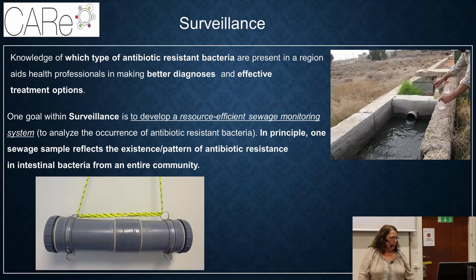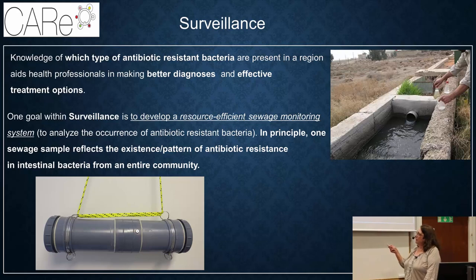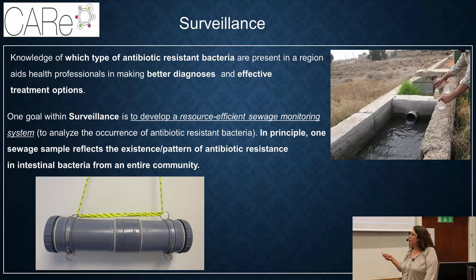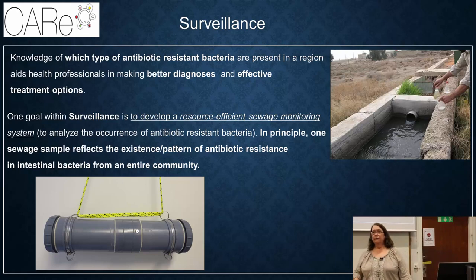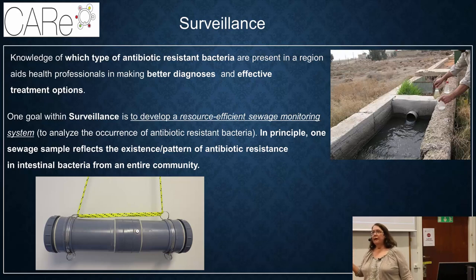Joachim Larson's group and another group are working on creating a very inexpensive detection device to be able to sample anywhere very cheaply, so that they can bring it back to the lab and figure out how many antibiotic-resistant bacteria there are. People just put it in water or wherever they're sampling, then send it back to Sweden or another lab, to quickly get better surveillance data.